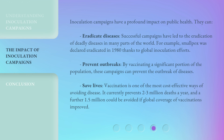Inoculation campaigns have a profound impact on public health. They can eradicate diseases — successful campaigns have led to the eradication of deadly diseases in many parts of the world. For example, smallpox was declared eradicated in 1980 thanks to global inoculation efforts. By vaccinating a significant portion of the population, these campaigns can prevent the outbreak of diseases and save lives. Vaccination is one of the most cost-effective ways of avoiding disease — it currently prevents 2 to 3 million deaths a year, and a further 1.5 million could be avoided if global coverage of vaccinations improved.